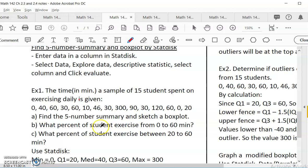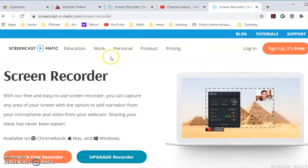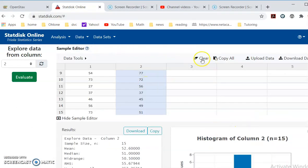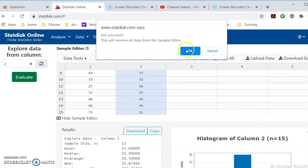Enter the data into StatDisk. This is an example where it's an exercise, number of minutes a group of students exercise. Some people didn't exercise. Some people exercise 20 minutes. Some exercise 300 minutes, 5 hours daily. Maybe that person is a coach or someone. Let's go to StatDisk. This is StatDisk. We have online. This is my old data. I don't want to use it anymore. I clear all of it.